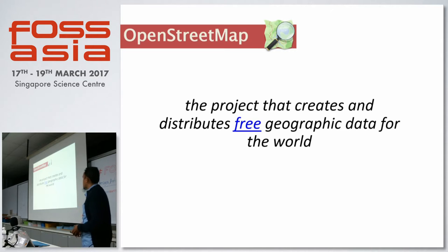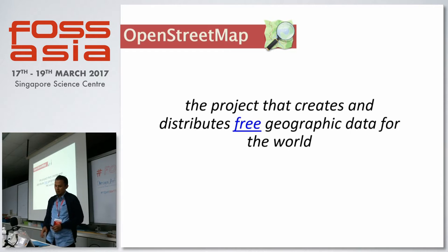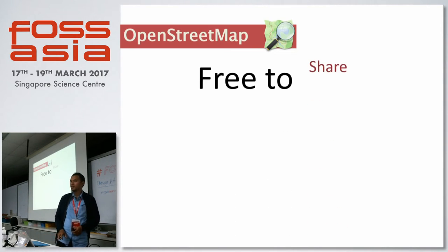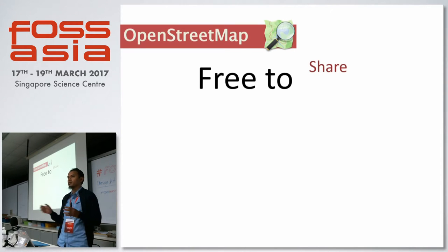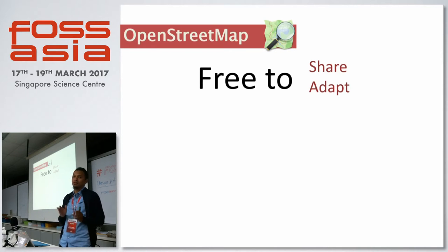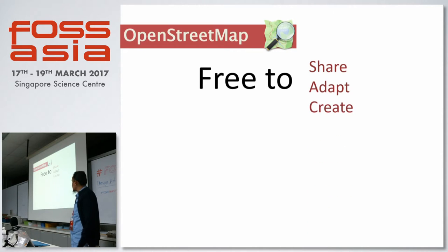Basically, OpenStreetMap is the project that creates and distributes free geographic data for the world. What's the definition of free? That consists of free to share — meaning that you can share the data, you can download the whole planet data of OpenStreetMap, and you can copy that among your friends. You would not get sued, and no one would call you a pirate. And it's free to adapt — you can translate OpenStreetMap in your own language, even your own traditional language.